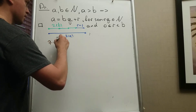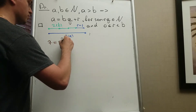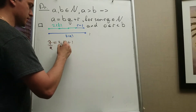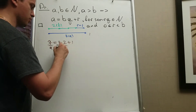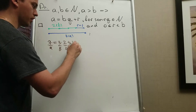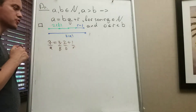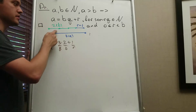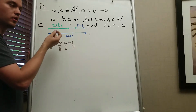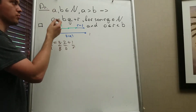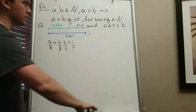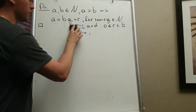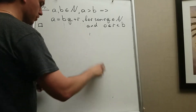So in this example R is equal to 1, meaning 7 = 3 × 2 + 1, where A = 7, B = 2, Q = 3, and R = 1. I showed this in one concrete example, but I want to prove this property for any natural numbers A and B such that A is strictly bigger than B.